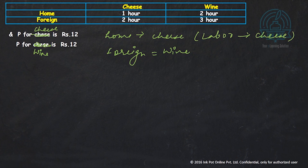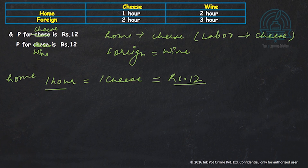Then one hour, home, I'm talking about home first. One hour produces one unit of cheese and that unit of cheese is worth Rs.12. So that means one labour hour is worth Rs.12 which means the wage rate in the home country is Rs.12.